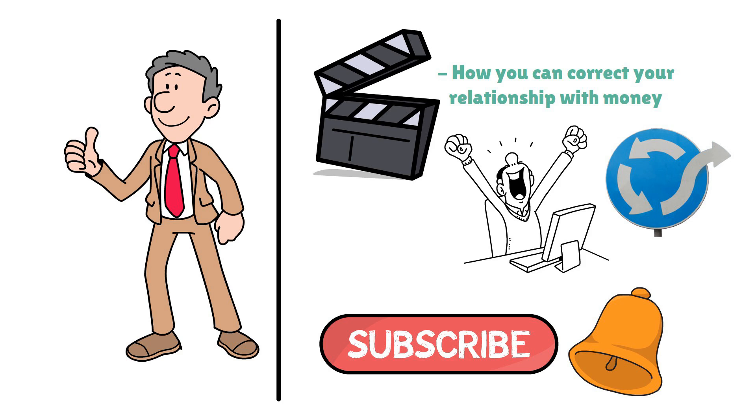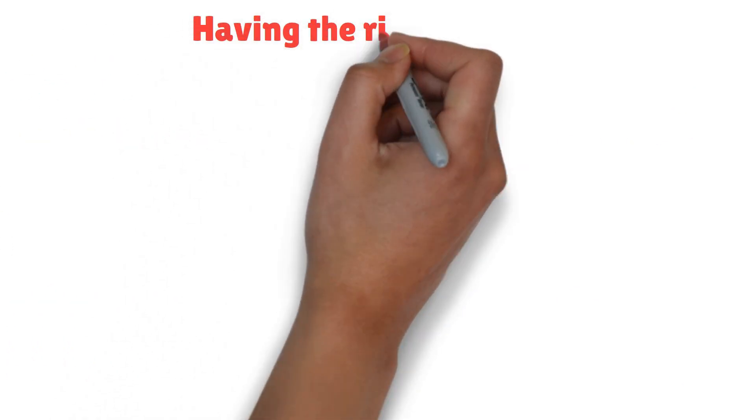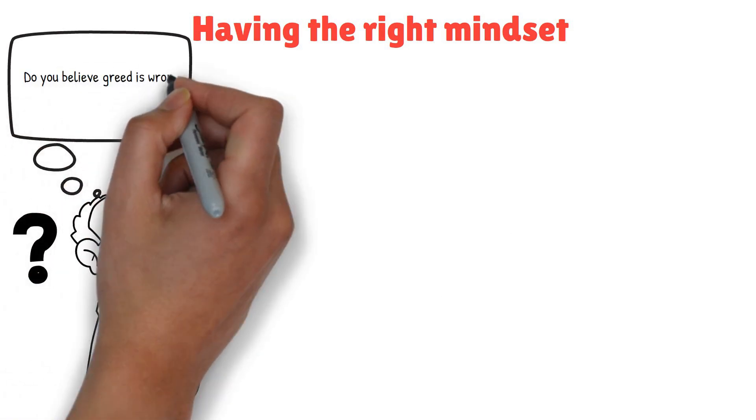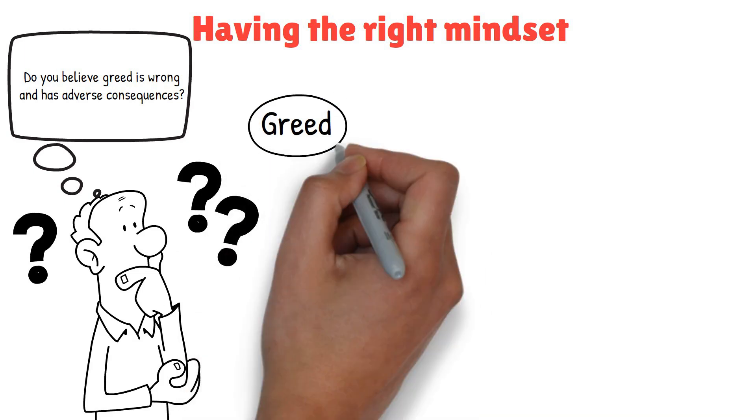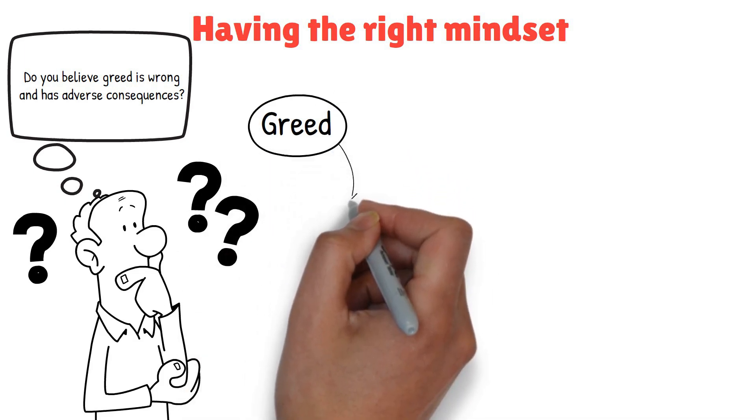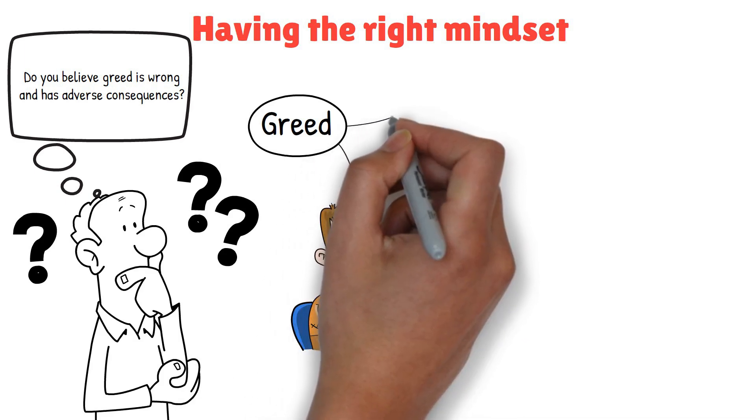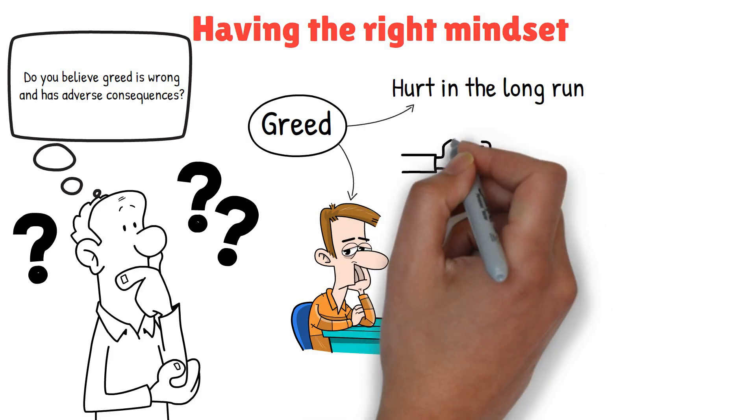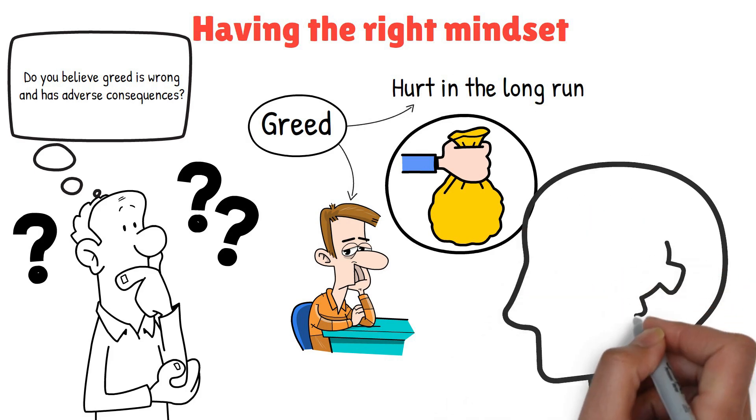The step in our journey to murder your greed and achieve true contentment is to focus on having the right mindset. Ask yourself, do you believe greed is wrong and has adverse consequences? This might sound simple, but it's a fundamental step. If you don't genuinely believe that greed can lead to negative outcomes, it's going to be tough to change your behavior. Greed can push you to make decisions that might seem good in the short term, but can hurt you in the long run. It can make you prioritize money over relationships, health, and happiness.